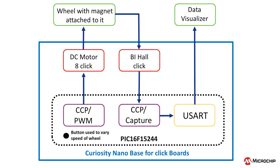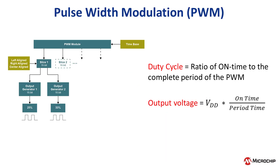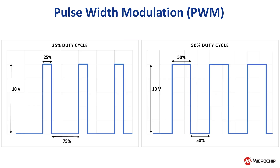Let us begin with Pulse Width Modulation, or PWM. PWM allows for the control of the average output power by controlling how long the signal is on and off. Common applications of PWM include LED dimming, variable speed motor control, and countless other possibilities. The term duty cycle is used to describe the ratio of on time to the complete period of the PWM. For example, if you had a 5-volt output with a duty cycle of 40%, the average voltage would be 2 volts over the cycle.